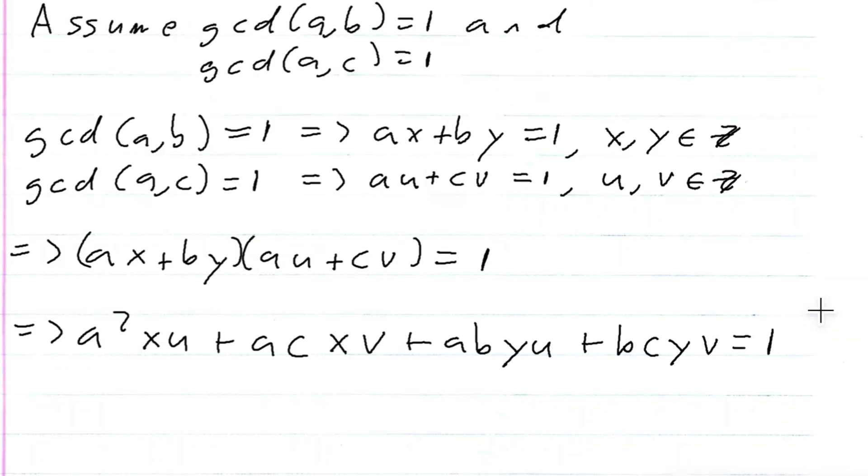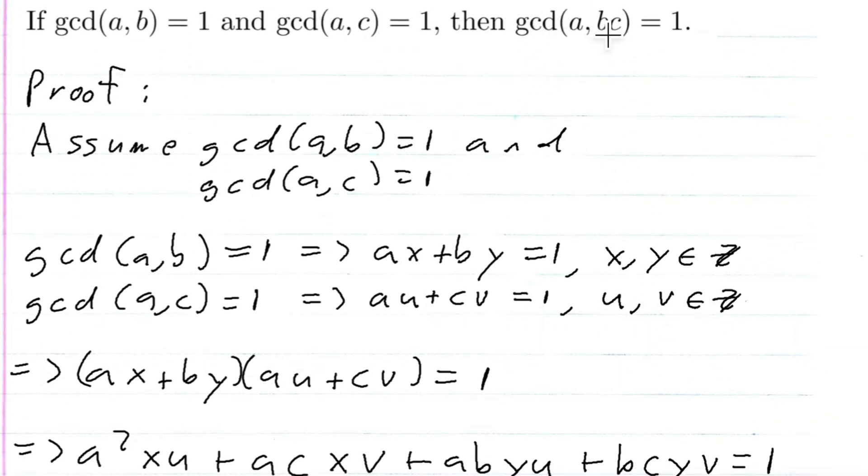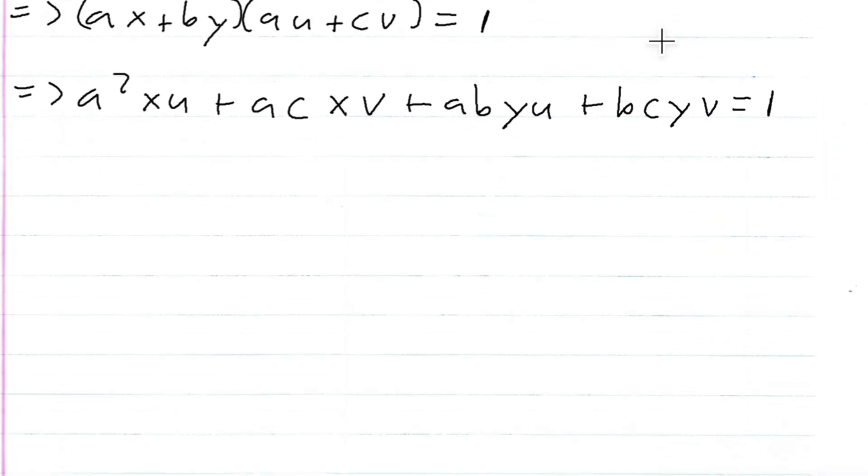So now, remember, I want the GCD of A and BC equal to one. So I'm gonna try to find that linear combination in here. So, I know that these three terms have an A, so I'm gonna factor out that A, and then I'll be left with A times XU plus CXV plus BYU. And then, I want that BC, so I'll do BC here, and then inside here, I'll do YV. And I know that is equal to one.